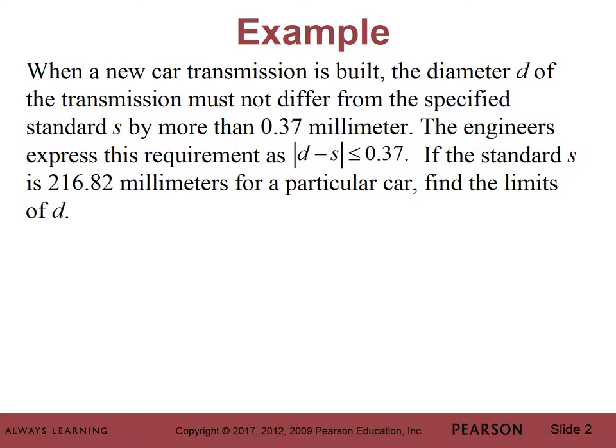When a new car transmission is built, we're using our imaginations, imagining ourselves in the factory. The diameter D of the transmission must not differ from the specified standard S by more than 0.37 millimeter. The engineers express this requirement as the absolute value of D minus S less than or equal to 0.37. If the standard S is 216.82 millimeters for a particular car, find the limits of D.